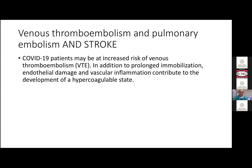There are no clear-cut guidelines as to how to predict VTE, but some guidelines suggest that a D-dimer level of more than 1,000 may be predictive of risk, and these are the patients who might benefit from anticoagulation and thromboprophylaxis.